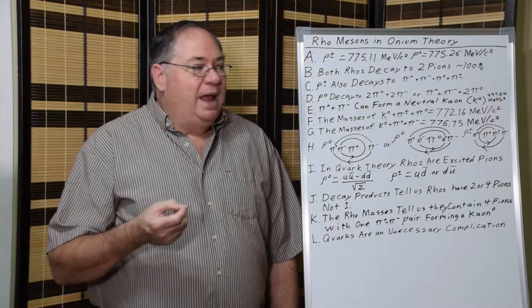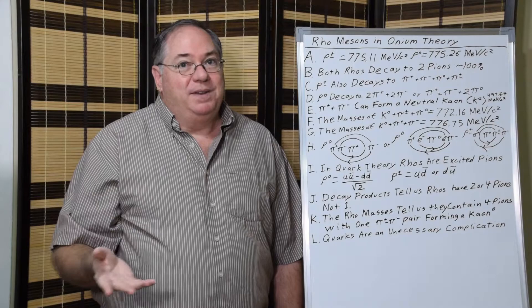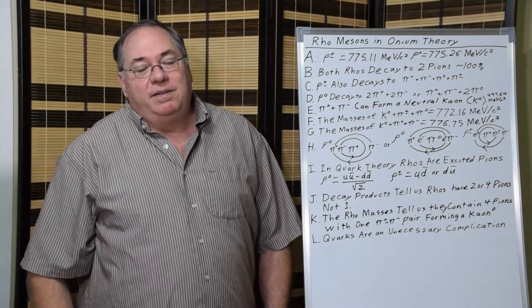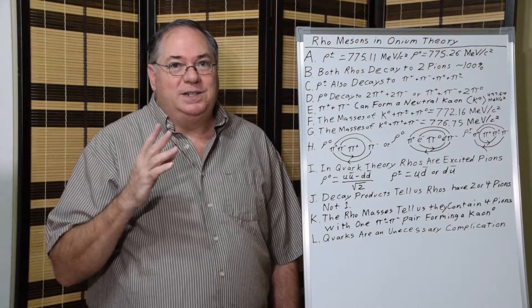For the neutral rho, we add up the mass of the neutral kaon again and two charged pions, and we get a mass of 776.75 MeV/c², which is within 1.5 MeV/c² of the correct mass.